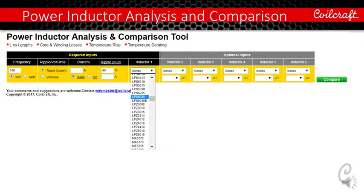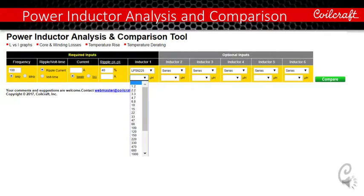Here is the interface. This tool allows you to directly select up to six specific inductors to be analyzed or compared. The drop-down menu provides access to all Coilcraft's standard series and the selection of off-the-shelf inductance values.